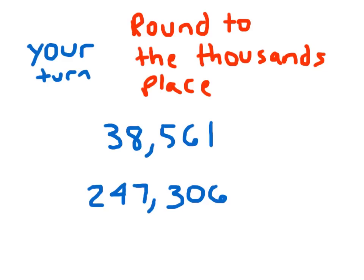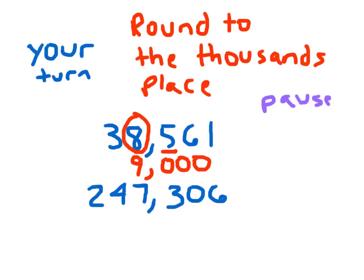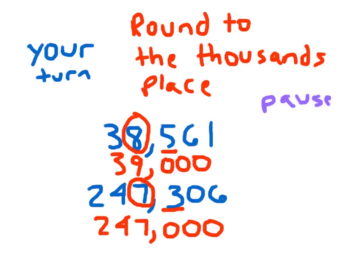Here are two more problems — round to the thousands place. For the first problem, circle the 8 and underline the 5. Because 5 is between 5 and 9, add 1 to the 8, making it a 9. Digits to the right change to 0, and all other digits stay the same. For the next problem, circle the 7 and underline the 3. Because 3 is between 0 and 4, the 7 stays the same. Digits to the right change to 0, and all other digits stay the same.